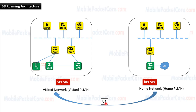Roaming means that the UE travels from its home network to another country or location that is outside the coverage of its home network. So the UE connects to its home network from the visited network it currently exists in.